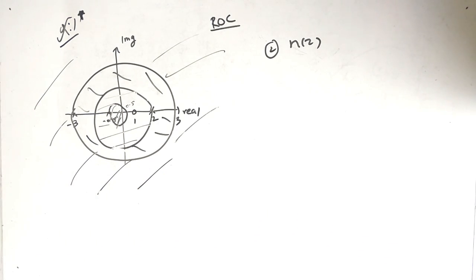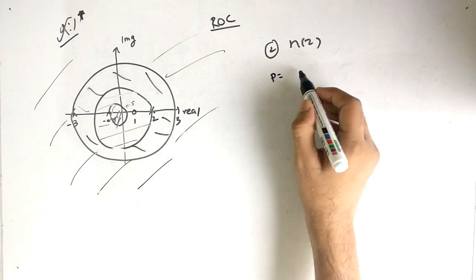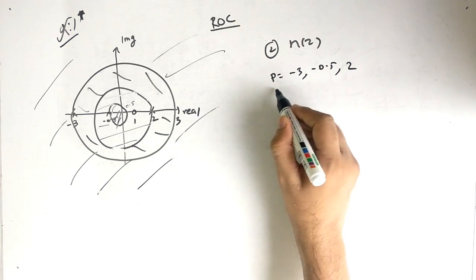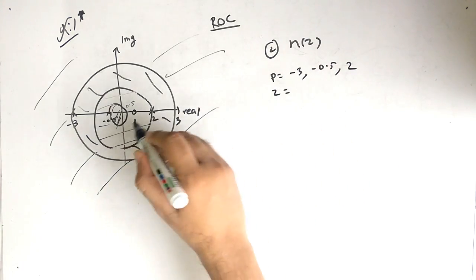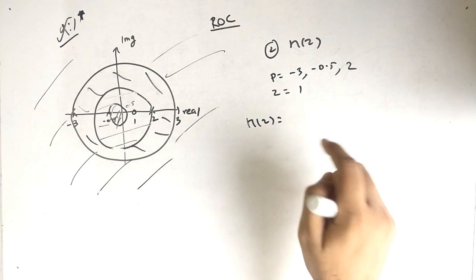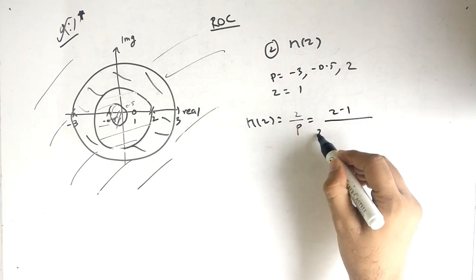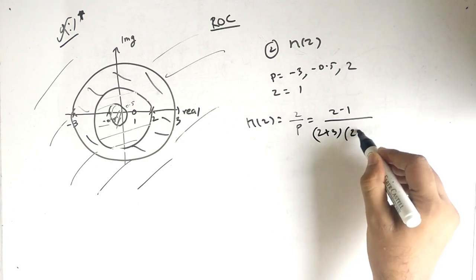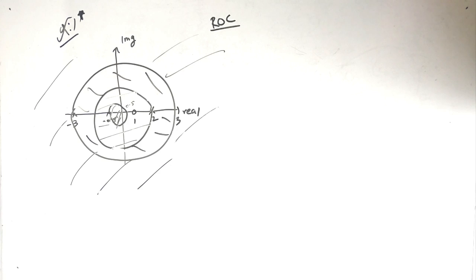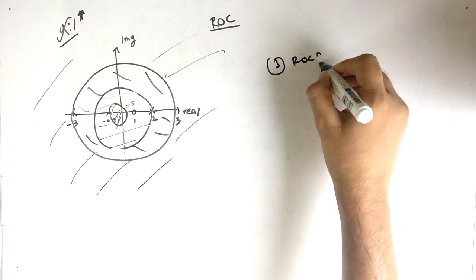The next question is: what is H(z)? The poles are at −3, −0.5, and 2, and the zeros are at 1 and 0.1. H(z) is expressed as zeros over poles: H(z) = (z − 1)(z − 0.1) / [(z + 3)(z + 0.5)(z − 2)]. Now the question is: in which ROC is the system stable?